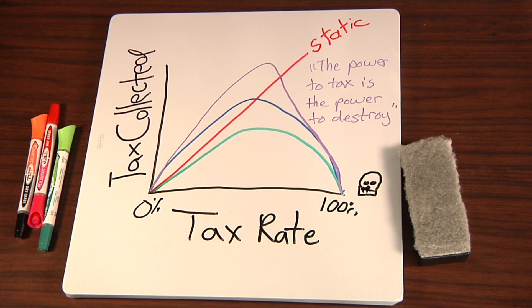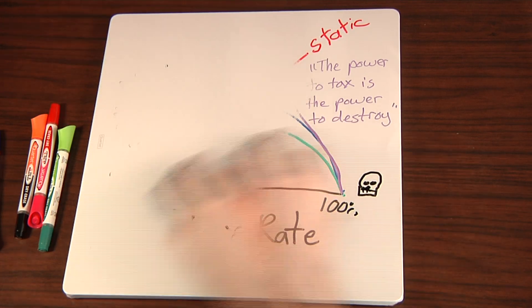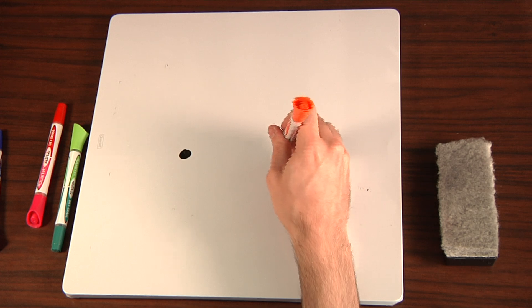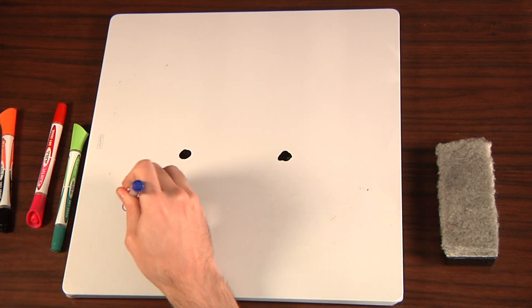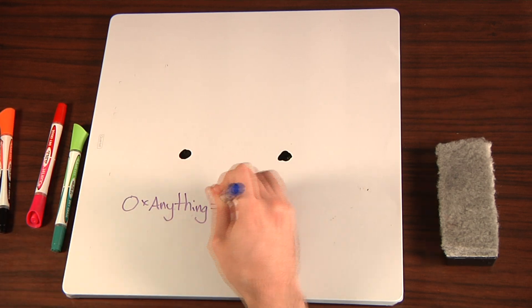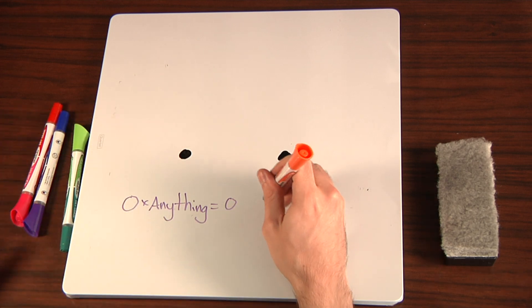Anyway, this curve will cross this line wherever you start, so the shape is relative. But we still have these two points. No tax is collected at a 0% tax rate just by definition, and no tax is collected at a 100% tax rate because whatever activity that was being taxed would have been taxed to death.